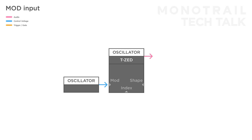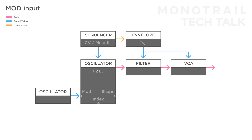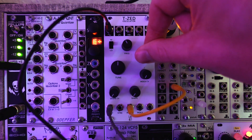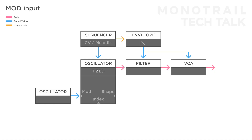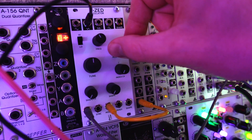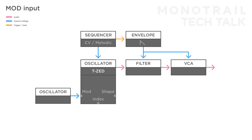You can expand the setup to a simple voice by sending the oscillator through a filter and VCA. Then use a sequencer to tune the TZ and trigger a simple envelope to open the filter and VCA. Subtle modulation amounts will result in subtle textures. Strong modulation with harsher waveforms can be interesting for more metallic, experimental and percussive sounds.